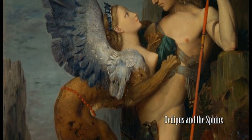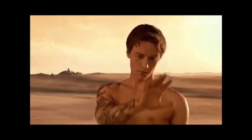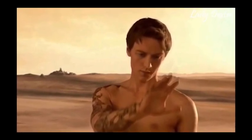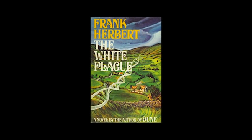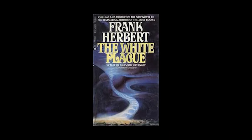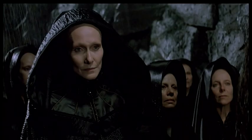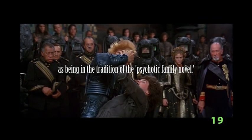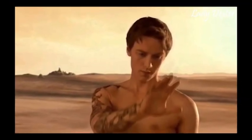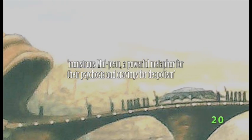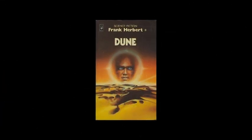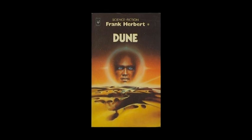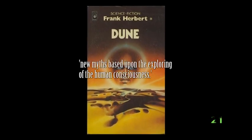Zinders looks at Leto II in this light, as he literally has a second skin provided by his subsequent metamorphosis when he joins with the symbiotic sand trout. Zinders also examines the relationship between power and insanity, making comparisons to Frank Herbert's The White Plague, a story which follows the murderous revenge of a scientist taking his own reprisal upon the IRA via a viral plague fatal only to women. Zinders goes on to identify the use of other memory by various characters and the Atreides themselves as being in the tradition of the psychotic family novel. Ultimately, Zinders views Leto II's symbiosis with the skin of a sandworm as being a monstrous moipo — a powerful metaphor for their psychosis and cravings for despotism. Zinders concludes that it is through the story of Dune that Frank Herbert demonstrates how psychoanalysis can serve the needs of literary fiction and creates new myths based upon exploring the human consciousness.